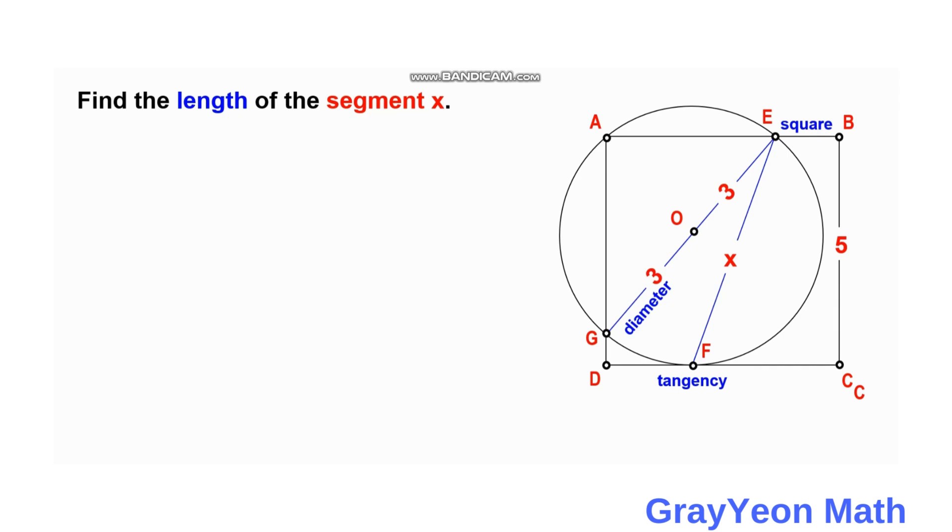Okay, so first thing that we may consider is we can draw a line from center O upwards and this should be perpendicular to this side of the square. So let's put a perpendicular symbol.